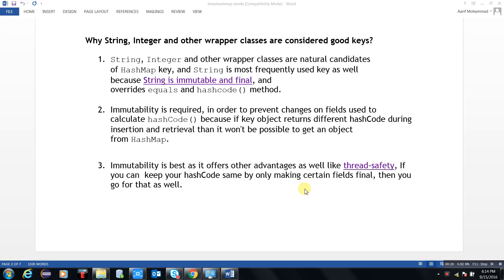String, Integer, and other wrapper classes are natural candidates for HashMap keys. Why is String most frequently used? Because String is immutable and final.